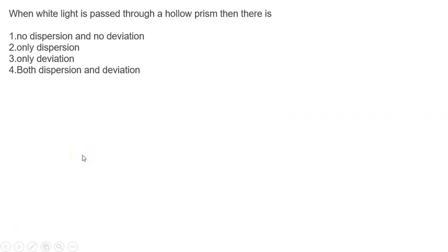When white light is passed through a hollow prism, then there is: no dispersion and no deviation, only dispersion, only deviation, or both dispersion and deviation. Let's say this is the hollow prism. This is a situation with very thin glass thickness.